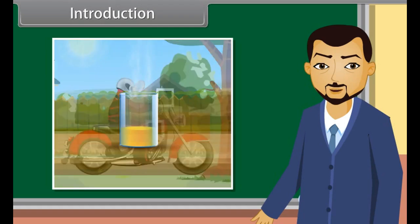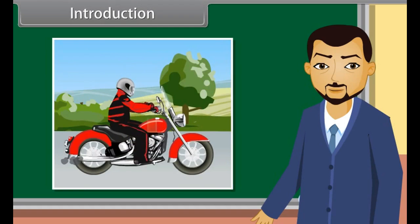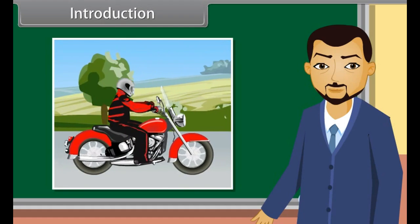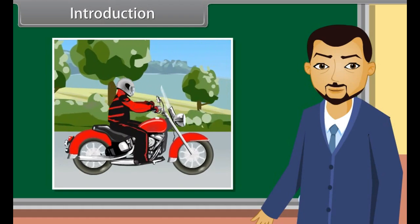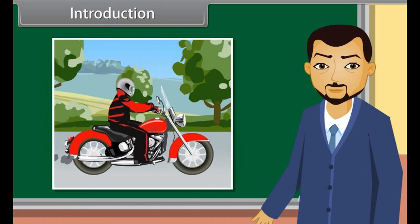However, if we use the same petrol in our bike, the petrol is converted into an energy source that is usable. Children, in this lesson, we will learn about the conventional sources of energy and the non-conventional sources of energy and its impact on the environment.